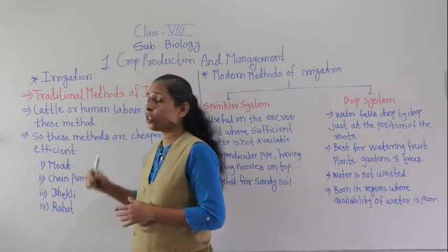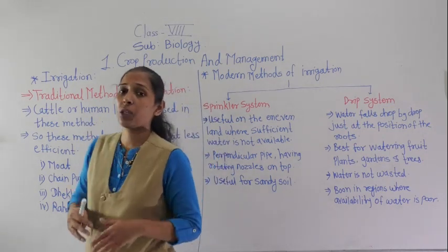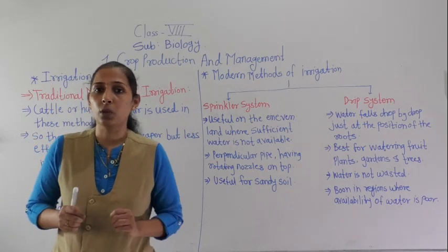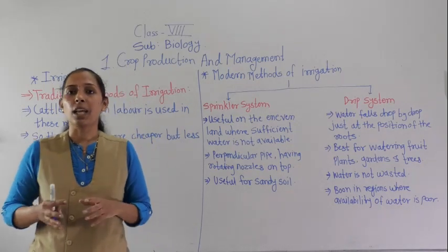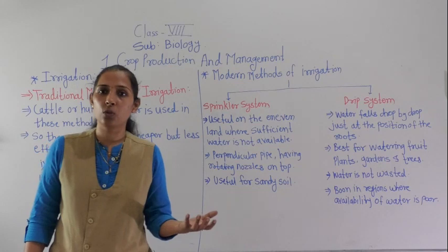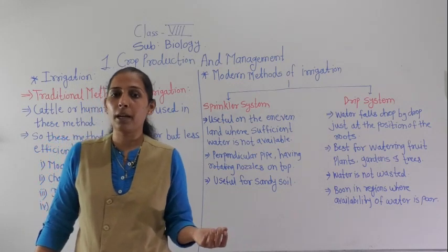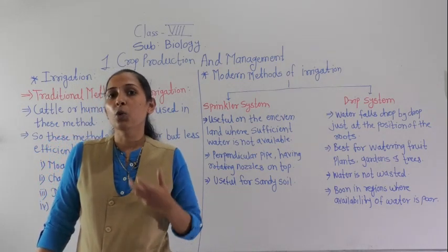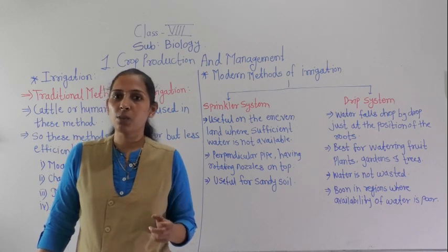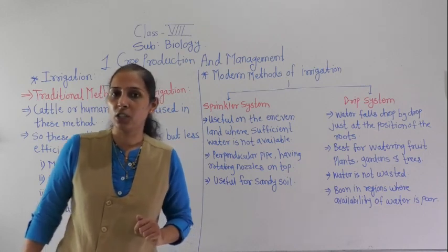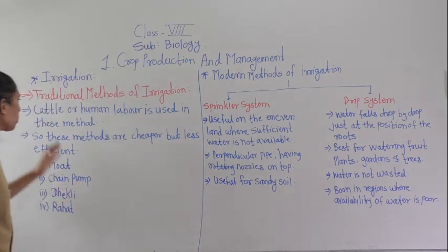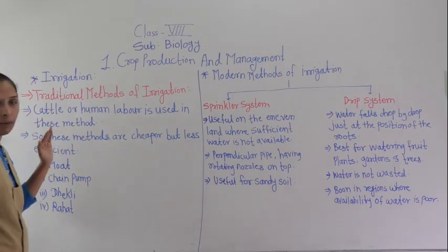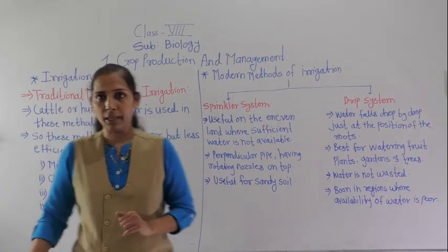In the traditional method, cattle as well as human laborers were used. Cattle are also used to irrigate the crops, and human labor work is more in the traditional method. So cattle and human laborers are used in this traditional method.